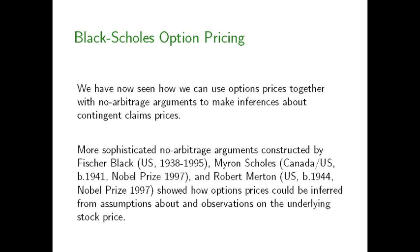The Black-Scholes formula was developed by Fisher Black and Myron Scholes, the two economists who gave it its name. Although around the same time, Robert Merton, a third economist, presented an alternative derivation of the same option pricing formulas, so that in the minds of most financial economists and market participants, the formula is associated equally with these three names: Black, Scholes, and Merton.